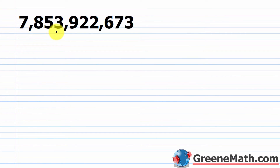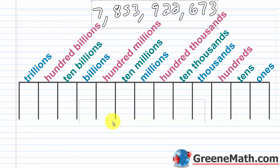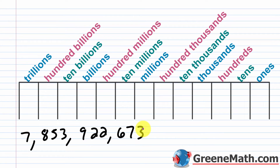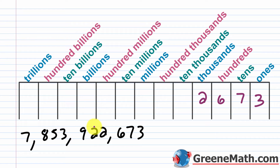Now let's look at a bigger one: 7,853,922,673. Take the rightmost digit, 3, and put it in the ones place. Working left: 7 goes into tens, 6 into hundreds, 2 into thousands, 2 into ten thousands, 9 into hundred thousands, 3 into millions, 5 into ten millions, 8 into hundred millions, and 7 into the billions place.